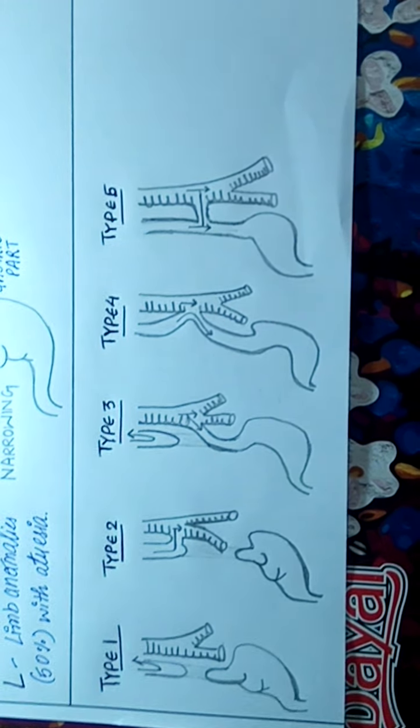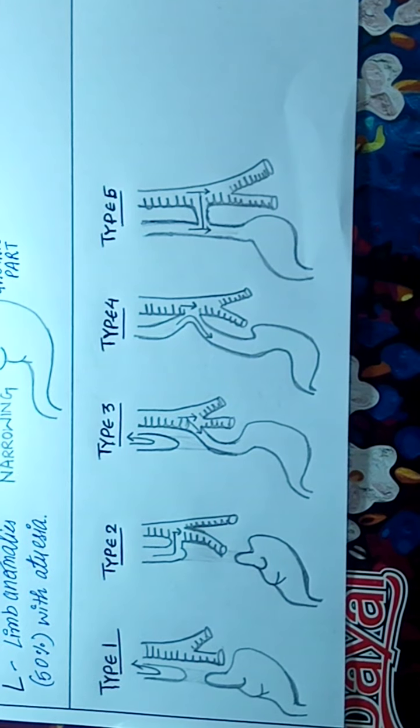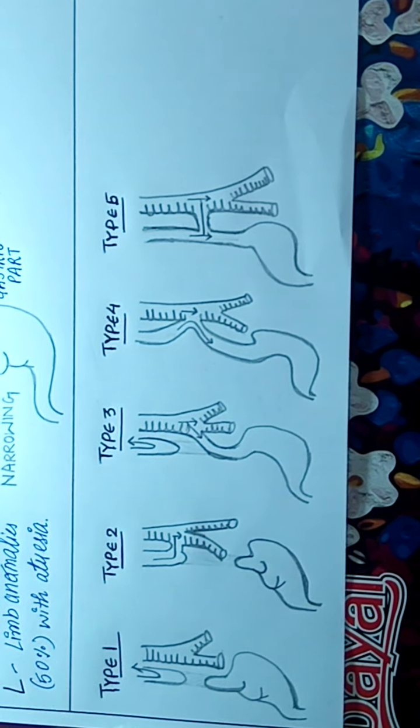In type 2, the proximal part will have a fistula formation and it will be connected to the trachea, and there will be a blind sac in the distal part.